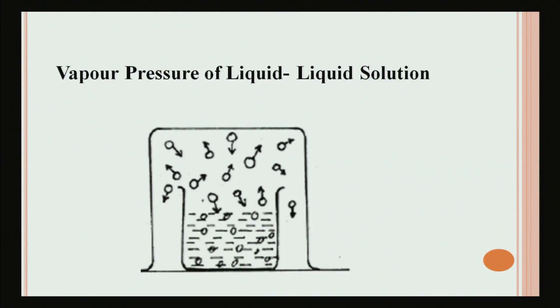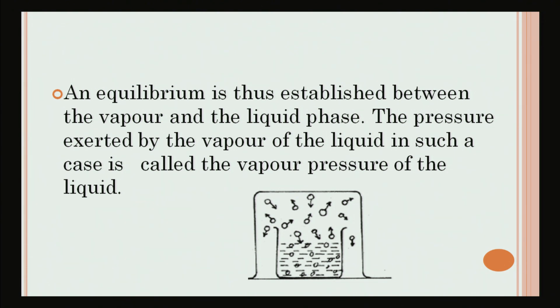Vapor pressure of liquid-liquid solution. If we keep an inverted beaker, as you have seen in the diagram, over a small beaker containing a pure liquid, it is found that the molecules of liquid start evaporating in the form of vapors and fill the empty space above the beaker containing the liquid. A time comes when the number of molecules evaporating per unit time is equal to the number of molecules condensing during that time, and equilibrium is established between the vapor and the liquid phase. The pressure exerted by the vapor of liquid in such a case is called the vapor pressure of the liquid.